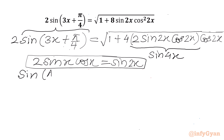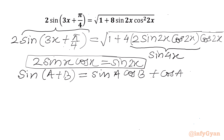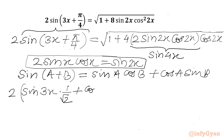I can write sin(A+B) equals sin A cos B plus cos A sin B. So the LHS gives us 2 times [sin 3x · cos(π/4) + cos 3x · sin(π/4)]. Since cos(π/4) equals 1/√2 and sin(π/4) also equals 1/√2, we get 2 times [sin 3x/√2 + cos 3x/√2].